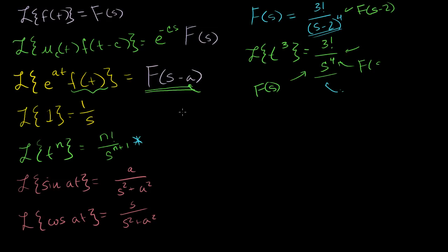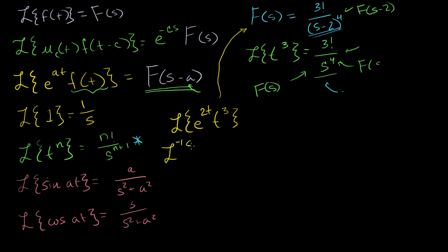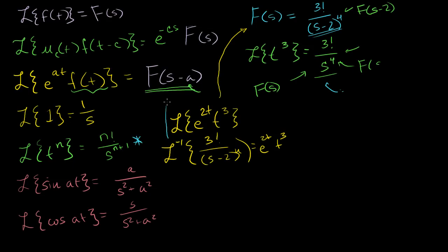Since we have F of s minus 2, this is the Laplace transform of e to the at times our f of t, with a equal to 2. So this is the Laplace transform of e to the 2t times t to the third. Or we could write that the inverse Laplace transform of 3 factorial over s minus 2 to the fourth is equal to e to the 2t times t to the third. If that seemed confusing, let's go the other direction — maybe that will make it clearer.